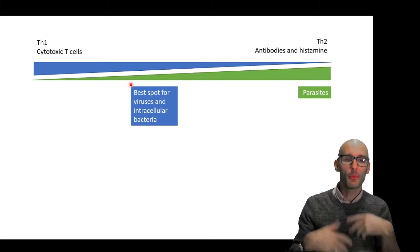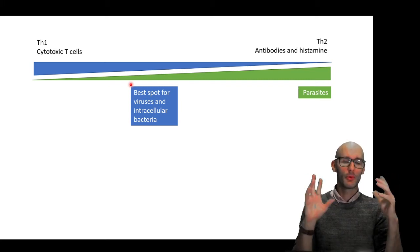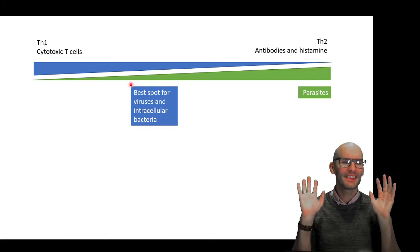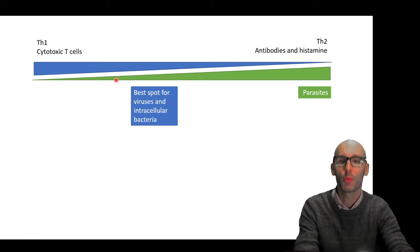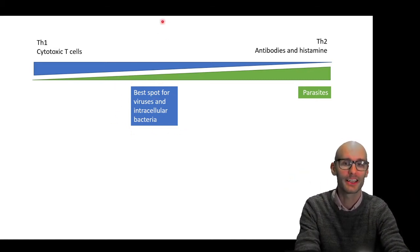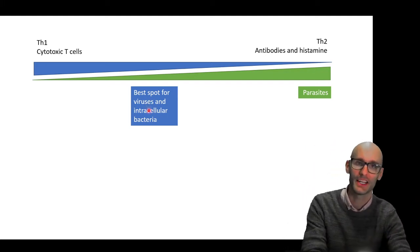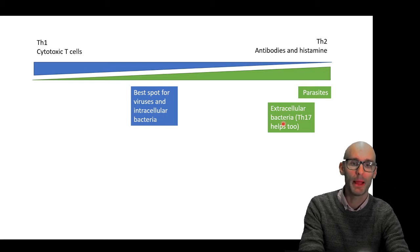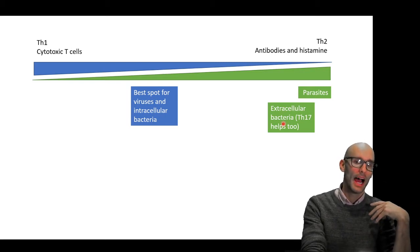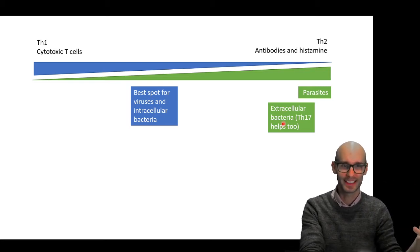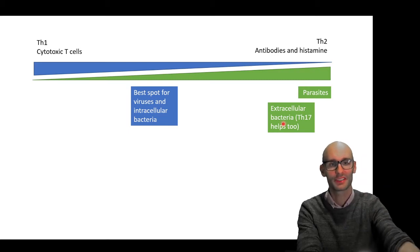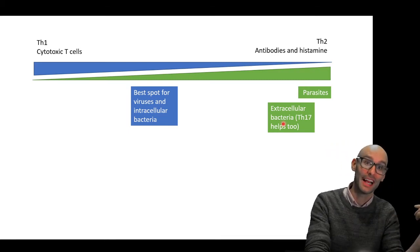So we might draw up a map like this, and this is just a guide, but a general map where maybe the best spot for viruses and intracellular bacteria is somewhere over here. A bit of a mixed response is leaning towards a Th1 response. And then maybe extracellular bacteria, because we don't really want cytotoxic T cells when the bacteria are extracellular. Perhaps we want more of a Th2 response.